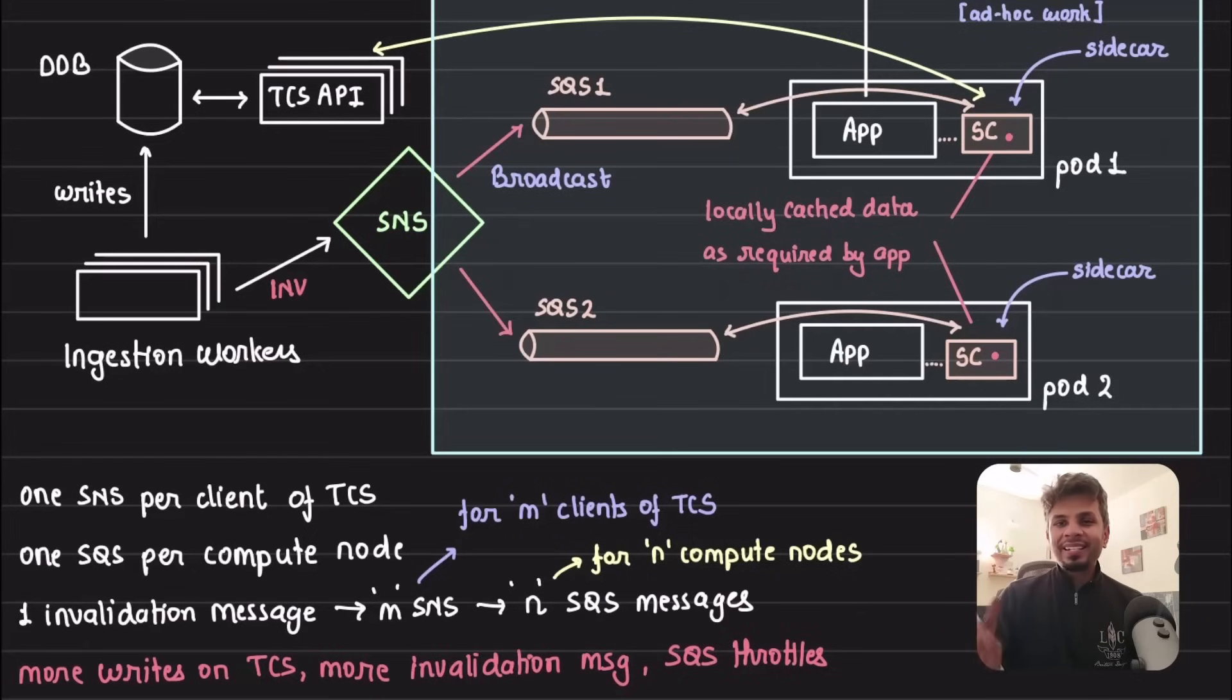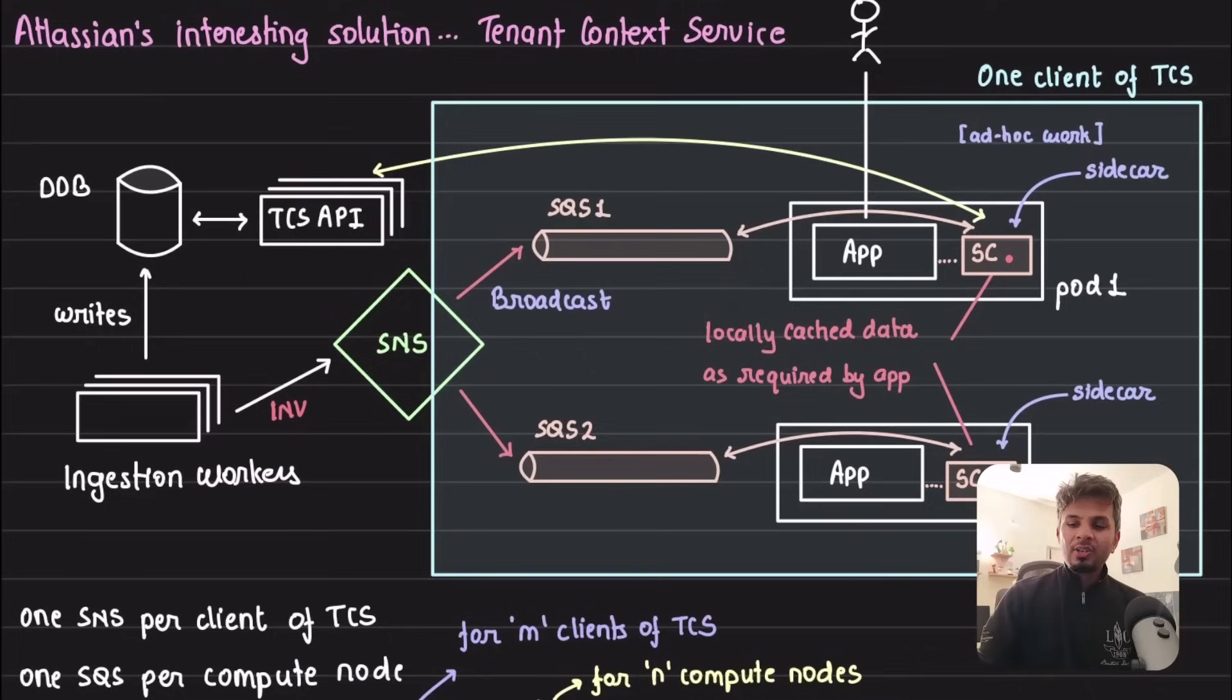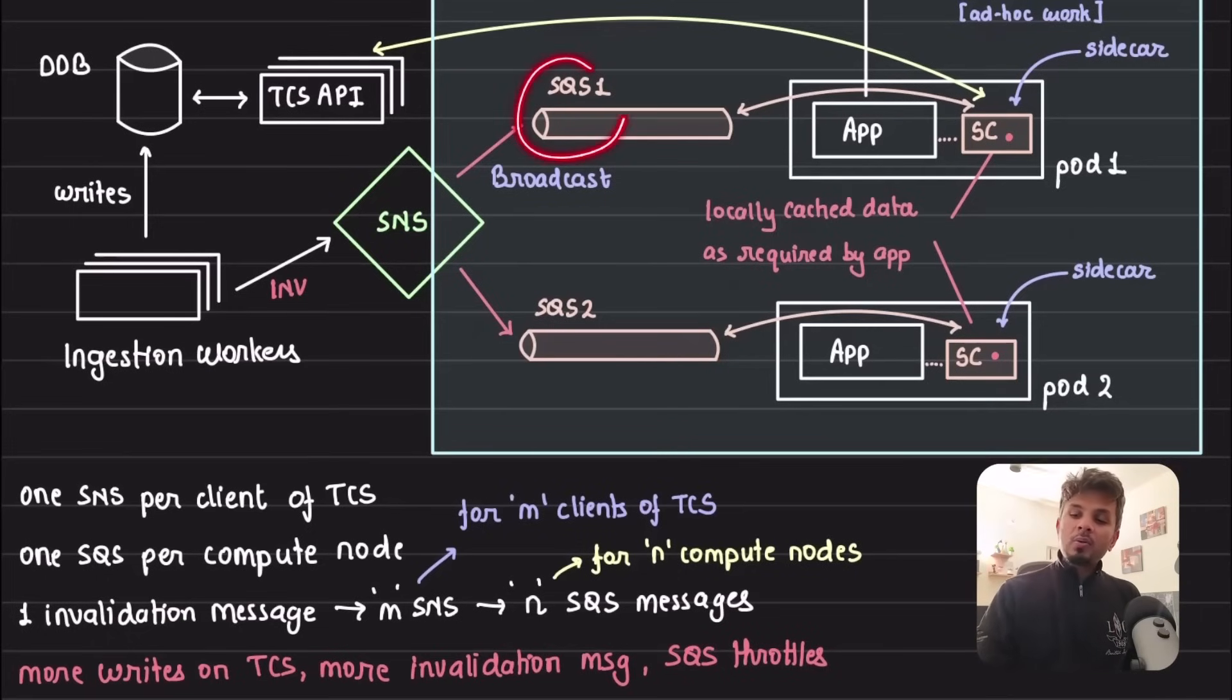You can start seeing the problem with this - this approach is not scalable. First thing first, you need one SNS topic per client of TCS. If there are N clients, each client would require one SNS topic. Second, you require one SQS queue per compute node, per pod, per EC2 server. That in itself sounds very weird. Why would you need to have one SQS for each EC2 server? That's the fun part. We all build things first class and then realize that at scale things don't work, which is perfectly fine.